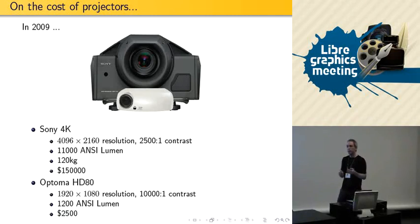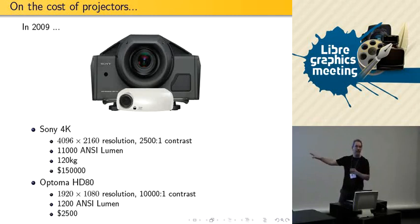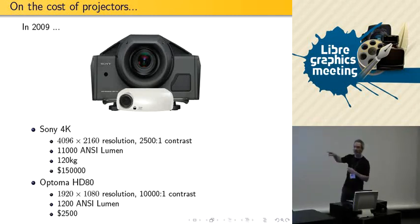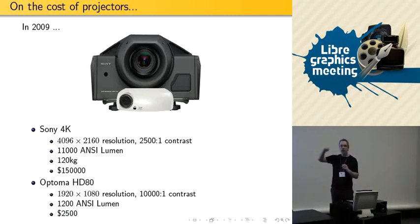Instead, there's also another evolution called home theater. These projectors are now tiny — about $2,000, 1200 lumen, and the resolution is HD: 1920 by 1080. The contrast is really good — 10,000 to 1. These are the projectors we use in our setup here. The prices of these projectors are going down very, very fast, so you can expect them to be very cheap in a few years.